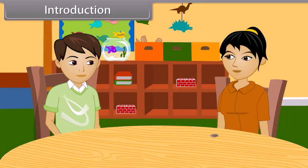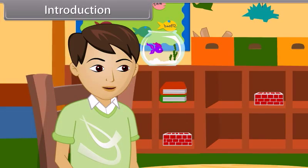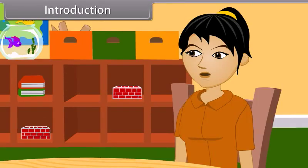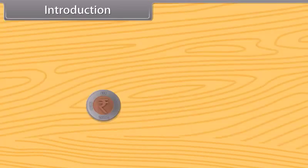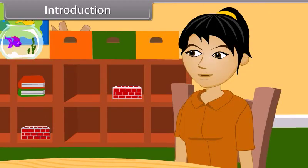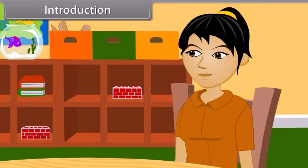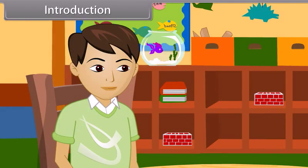Let's play a game of tossing a coin. If heads comes, I will win, and if tails comes, you will win. I am sure you will not win. Let's see. Ha ha ha, it's a tail — I win! I told you. But how do you know that? I did not know, I just guessed it. That was the probability.